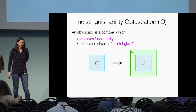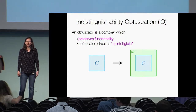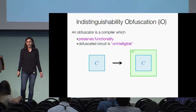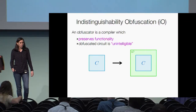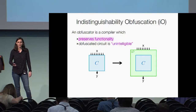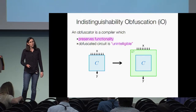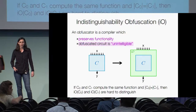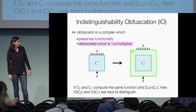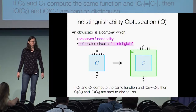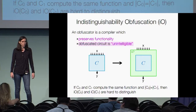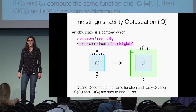At a high level, an obfuscator is a compiler which transforms one circuit into another in such a way that it satisfies two properties. First, it should preserve functionality, meaning that both circuits should have the same input-output behavior. Second, the obfuscated circuit should be unintelligible or hard to reverse engineer. In the case of IO, this is formalized by requiring that for two circuits which compute the same function, their obfuscations are computationally indistinguishable.